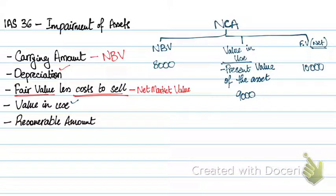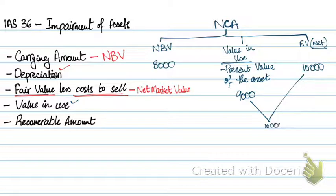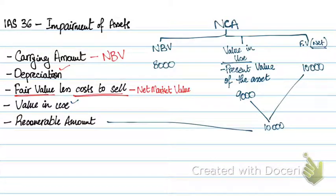So what is recoverable amount? Recoverable amount is how much I will get from the asset. Since the motive of any firm is profit maximization, this will be the higher of the value in use and the net fair value. In this case, that would be $10,000. So recoverable amount is the higher of an asset's fair value less cost to sell — that is the net market value — and its value in use.